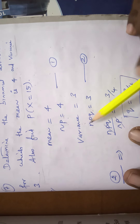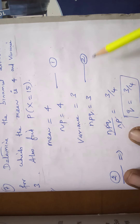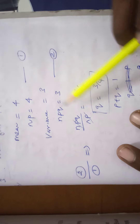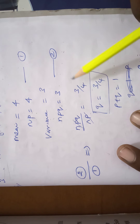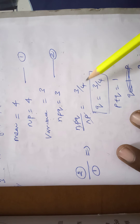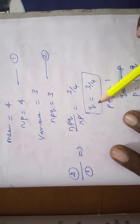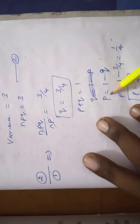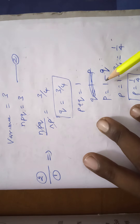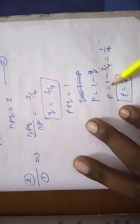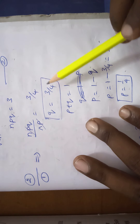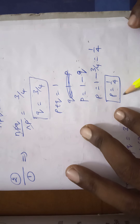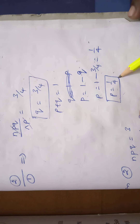Variance formula is Npq = 3, equation number 2. Dividing equation 2 by equation 1: Npq / Np = 3/4. Np cancels, so q = 3/4. Since total probability equals 1, p = 1 − q = 1 − 3/4 = 1/4.